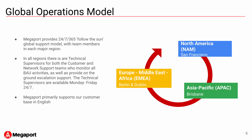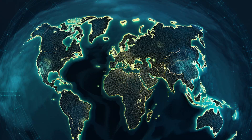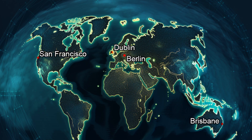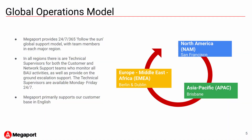Megaport provides 24/7, 365 global support. We use a follow-the-sun model and we have team members in North America, Asia Pacific, and Europe. Teams are based in San Francisco, Brisbane, Dublin, and Berlin. For all our regions, we have a technical supervisor for both the customer and network teams. Technical supervisors are an escalation point for customers and they help keep our teams running smoothly. They are available Monday through Friday during business hours in their region. We primarily support our customers in English.